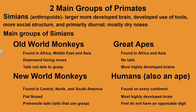Then we have the great apes, which are found in Africa and Asia. They have no tails and more highly developed brains. The humans also belong to the great apes and are found on every continent. They have the most highly developed brain, and unlike most other primates, they do not have opposable digits on their feet — in other words, our big toe does not move in the opposite direction of our other toes.